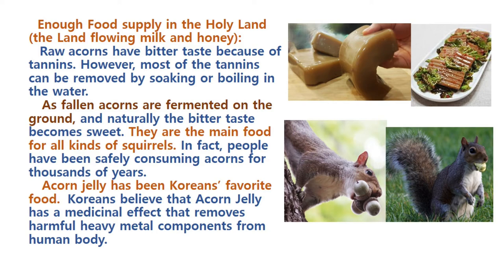But we must be wise. As fallen acorns are fermented on the ground, they are fermented as they dry — naturally, the bitter taste becomes sweet. Chestnut also — when they are fresh and you bite, you are disappointed because of bitter taste. But as you let them dry and ferment for two weeks or one month, it becomes sweet.